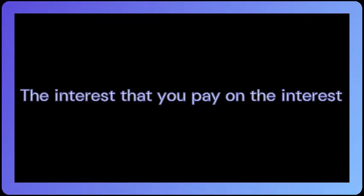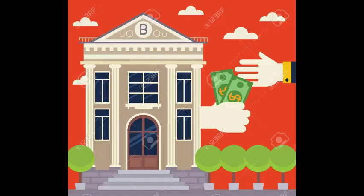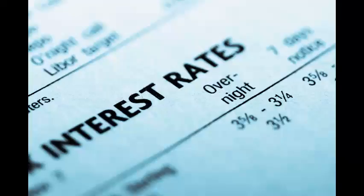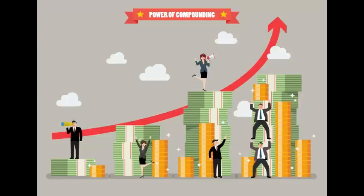The interest that you pay on the interest is called compound interest. The banks give you a loan on which they charge compound interest. It has varied applications such as interests on loans, credit card bills, and mortgages. If you want to grow your money fast, try compound interest as it grows rapidly.